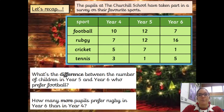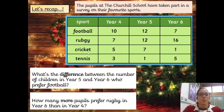Let's just recap from yesterday. So let's look at this table. The pupils at the Churchill School have taken part in a survey on their favourite sports. We can see down here we have the list of sports, and then we've got Year Four, Year Five, and Year Six. What's the difference between the number of children in Year Five and Year Six who prefer football?